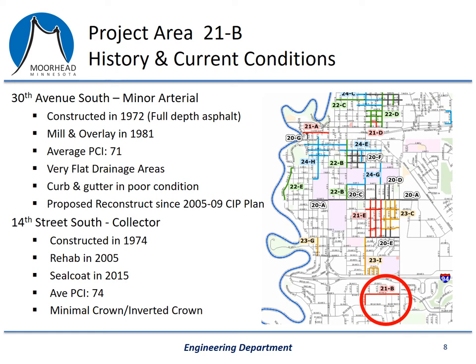14th Street South was constructed originally in 1974, and then the pavement section was replaced again in 2005, with a seal coat done more recently in 2015. The average PCI for this street is 74. It doesn't have quite the same problems that 30th Avenue South does, but there are places on this street that have no crown, or a slightly inverted crown, causing water to pool near the center of the road — and that's something that we would look to correct.